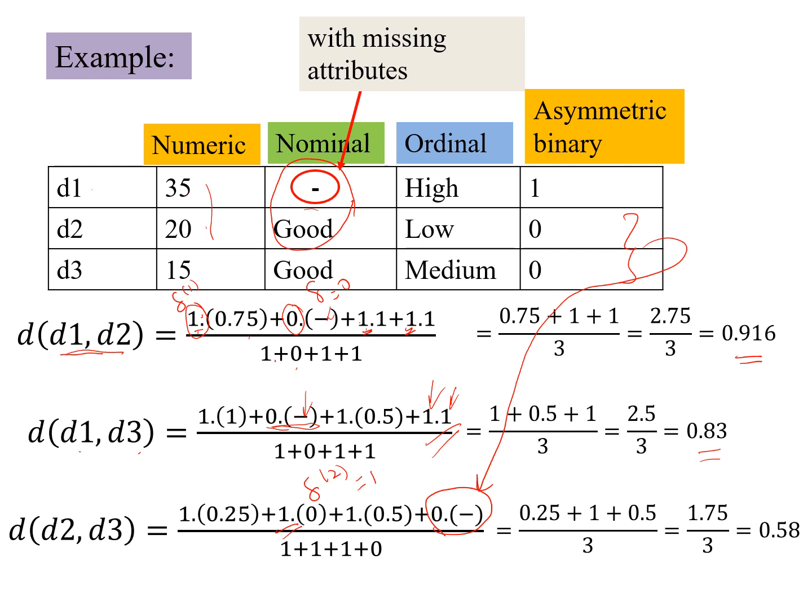So we get a feel of where our delta value, which is the aggregating parameter, becomes 0, where we have missing attributes, so this one and this one, where we have asymmetric binary attribute with both 0s, this one. So we get an overall computation of 0.58 for the d2, d3.